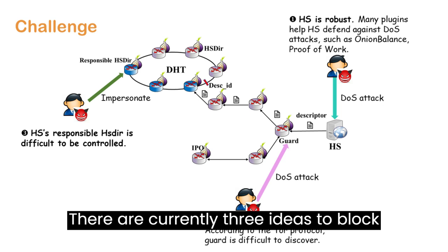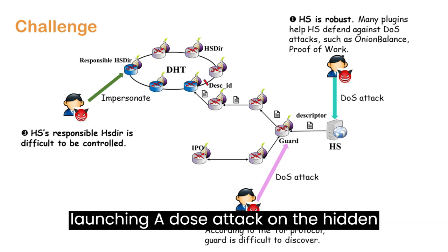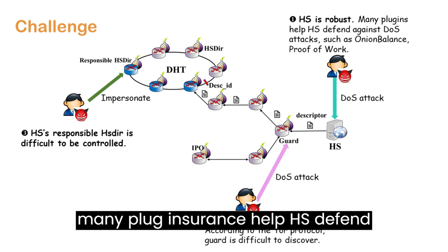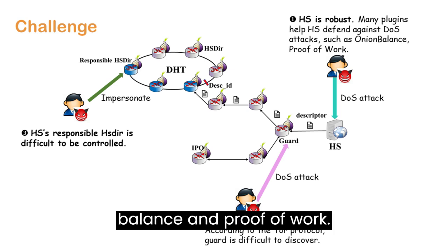There are currently three ideas to block hidden services. First, launching a DoS attack on the hidden service itself. However, many plugins help hidden services defend against DoS attacks, such as onion balance and proof of work.